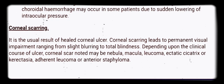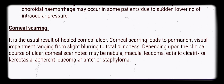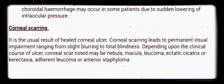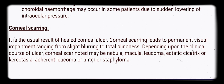Corneal scarring is the usual result of a healed corneal ulcer and leads to permanent visual impairment ranging from slight blurring to total blindness. Depending upon the clinical course of the ulcer, the corneal scar may be noted as nebula, macula, leucoma, ectatic cicatrix or corneal ectasia, adherent leucoma, or anterior staphyloma.